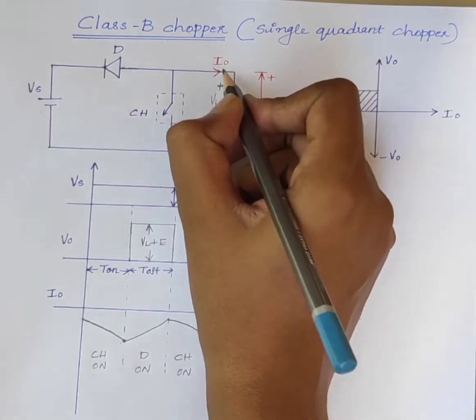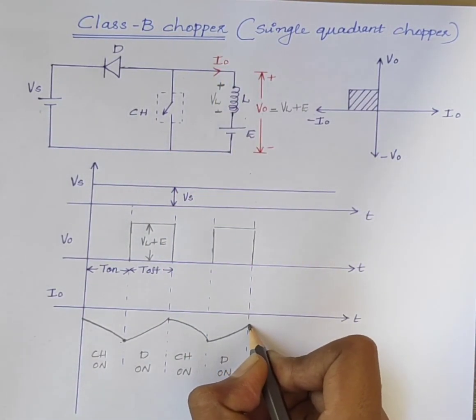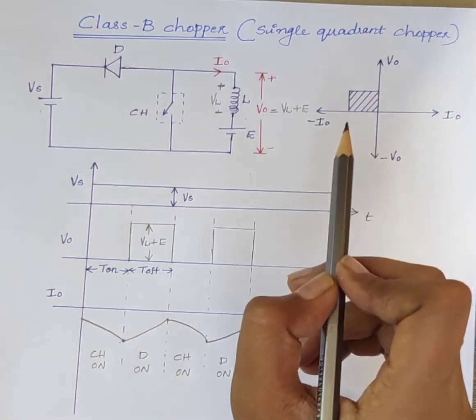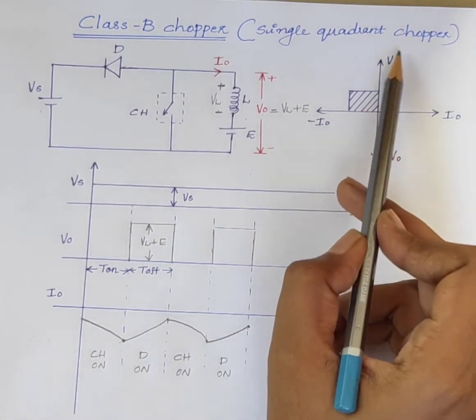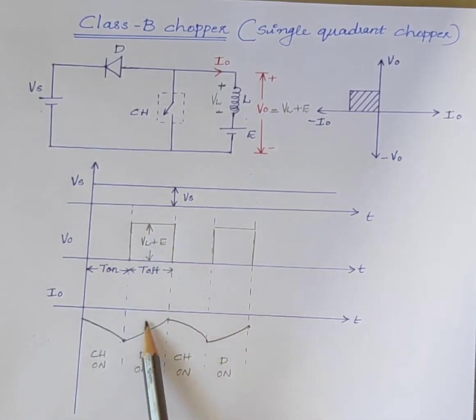Therefore, the output current I0 decreases gradually. Since, the output voltage V0 is always positive and the output current I0 is negative.